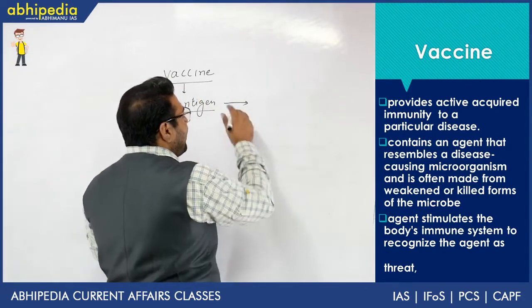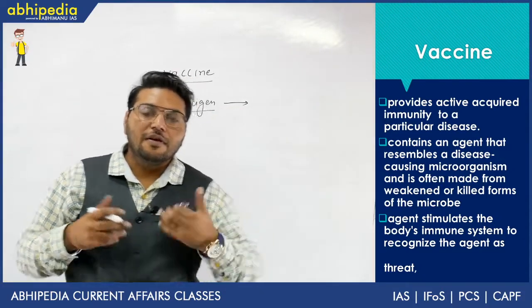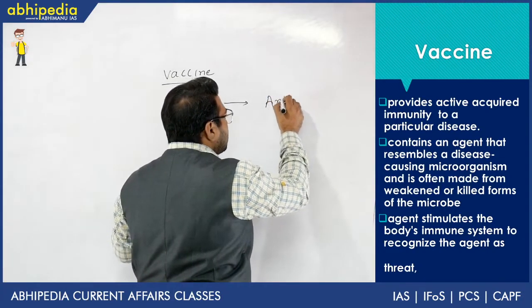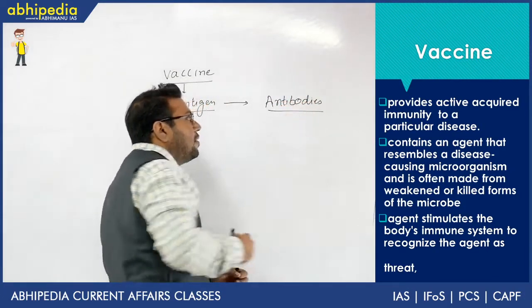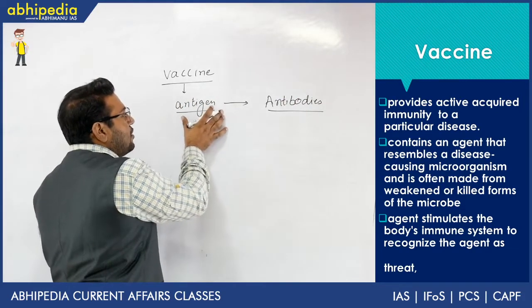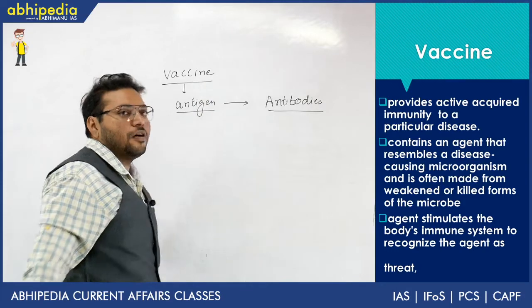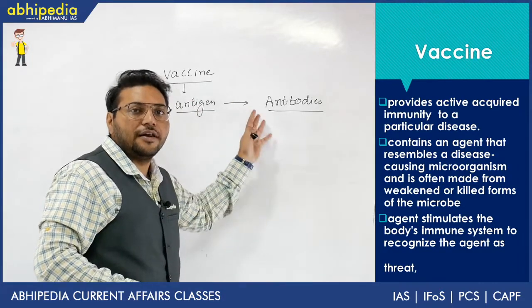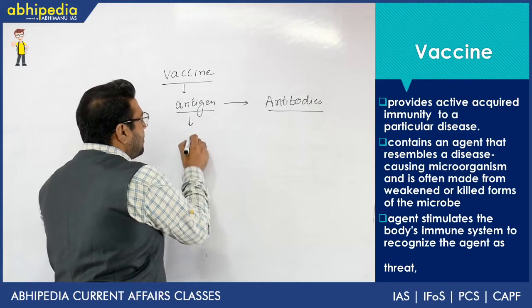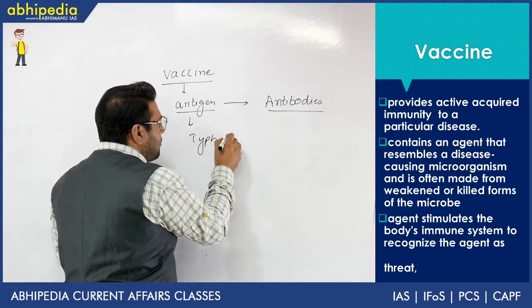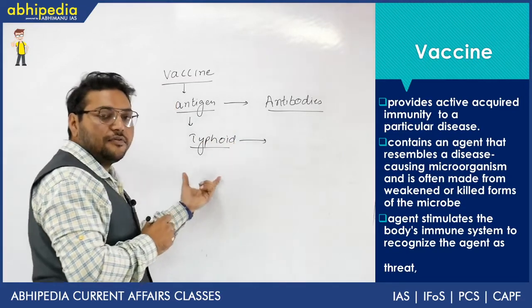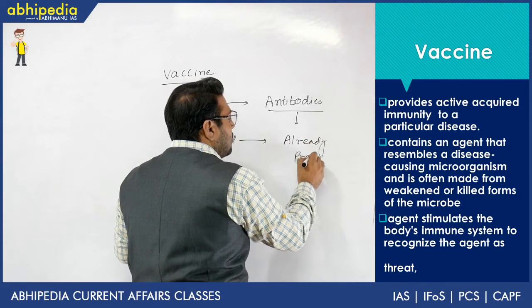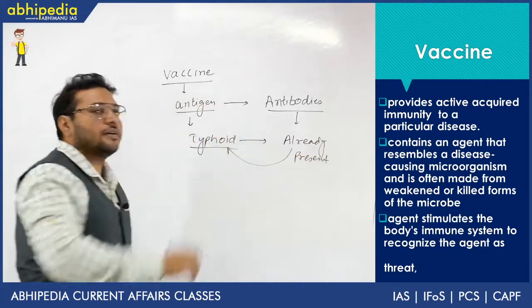Once this antigen enters the body — because it is a toxin — our body activates survival of the fittest and releases antibodies. Our immune system leads to a release of antibodies, and because the strength of this particular antigen is very less, it doesn't cause the actual disease — maybe some fever in some cases, that's it. So you won't get typhoid. Now when typhoid actually comes in the future, our body already has antibodies for that particular antigen, so chances are that it will overcome the disease. This is the concept of a vaccine.